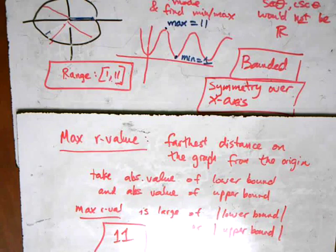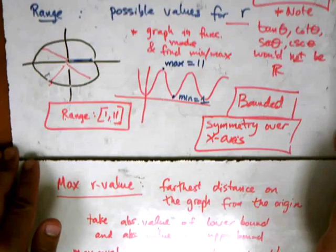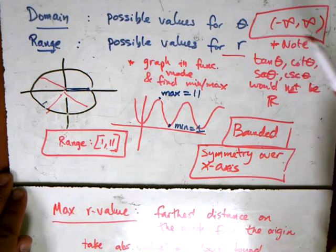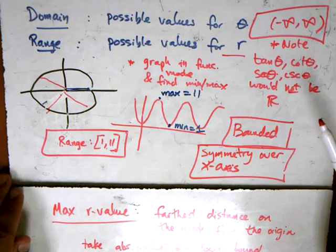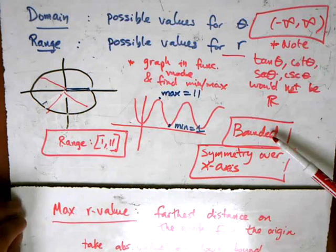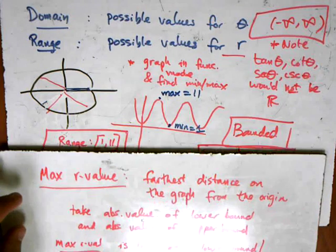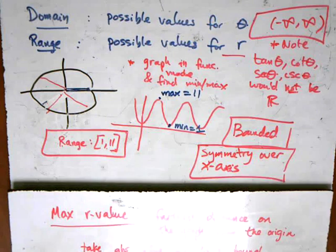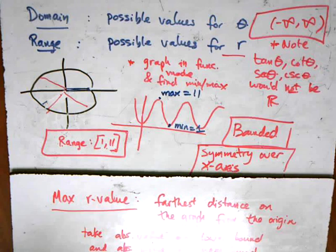And so there we have it, an analysis of a polar graph using domain and range. Domain is in terms of θ, range is in terms of the radius. Symmetry, we talked about that in the previous video. Boundedness. And then finally a new characteristic of a graph, which is the maximum r-value or the farthest distance from the origin. This all together gives us a pretty nice picture and a lot of details about the graph of a polar function.